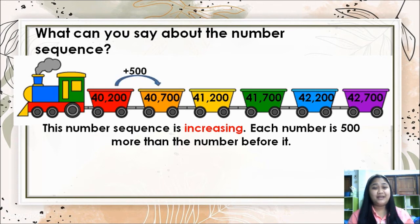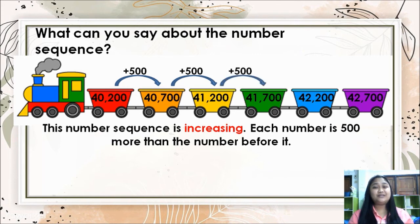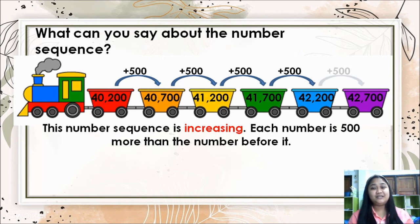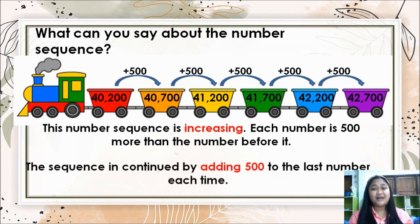So: 40,200 + 500 = 40,700. Next, 40,700 + 500 = 41,200. Next, 41,200 + 500 = 41,700. Next, 41,700 + 500 = 42,200. And the last one: 42,200 + 500 = 42,700. The sequence is continued by adding 500 to the last number each time.